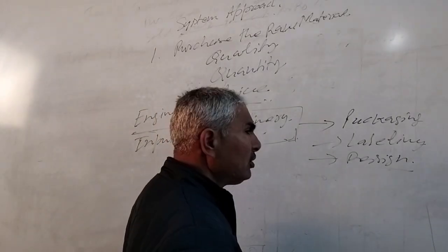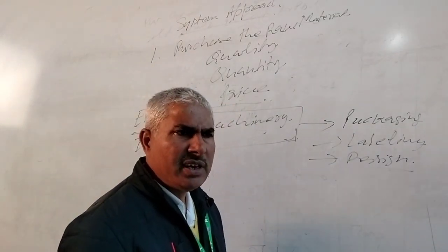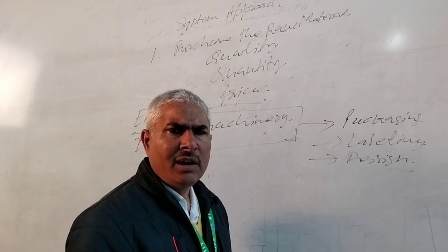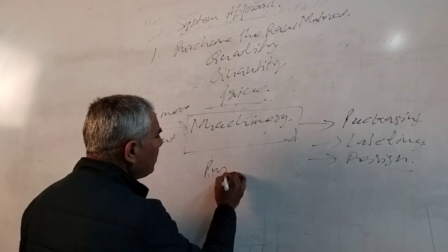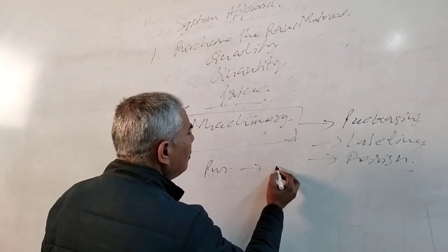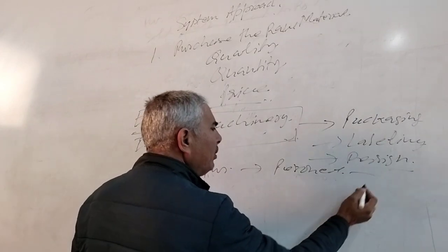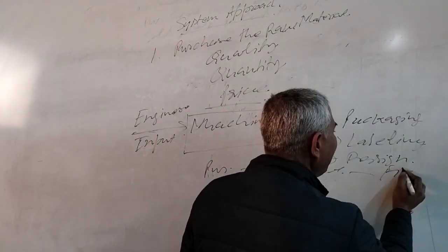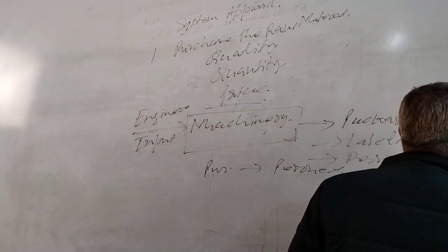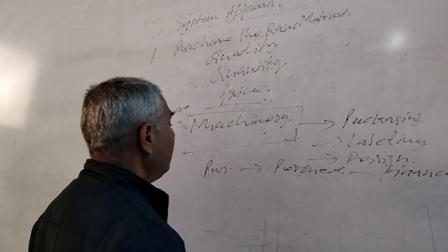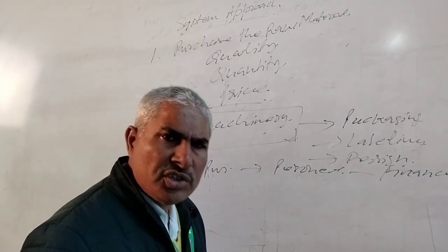We can say our system of growth is one variable depending upon another variable. Each and every department depends upon another department. For example, the purchase department depends upon the personnel department, the personnel department depends upon the finance department, the personnel department depends upon the advertising department, and so on. One variable depends upon another variable — that is called the system approach.